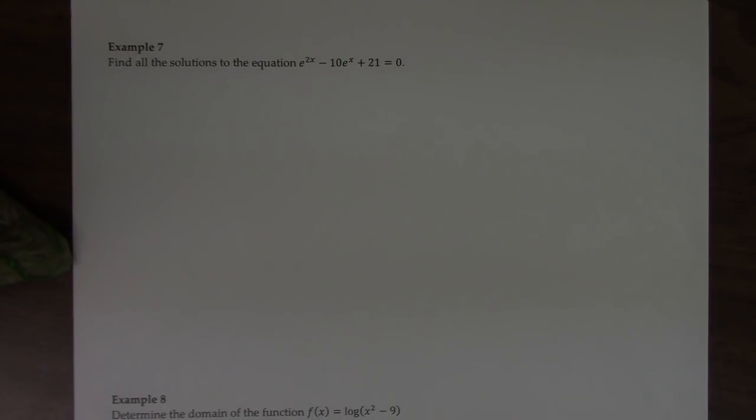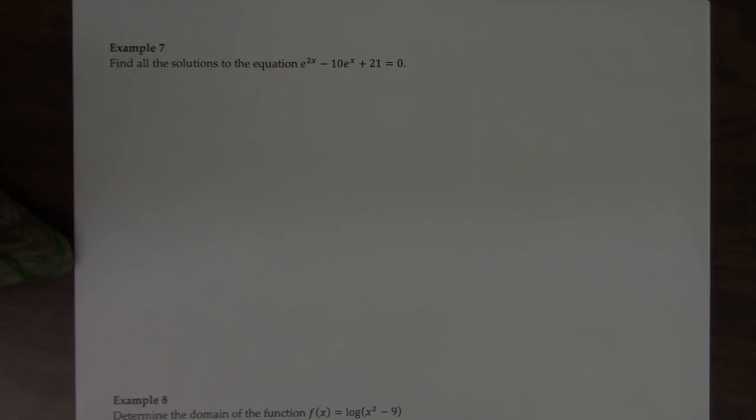Example 7 asks us to find all the solutions to the equation e to the 2x minus 10e to the x plus 21 equals 0.